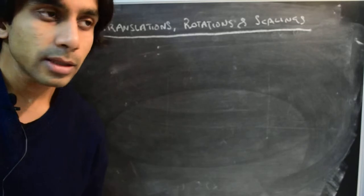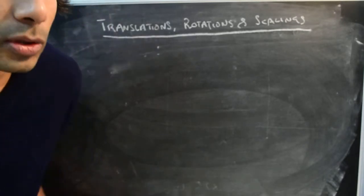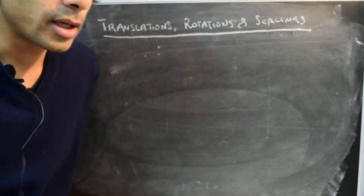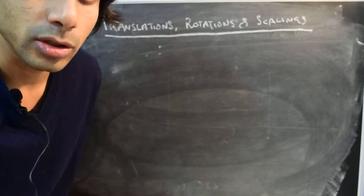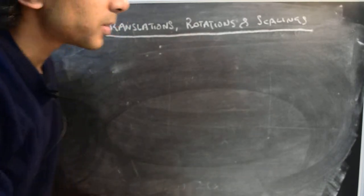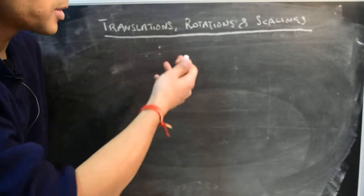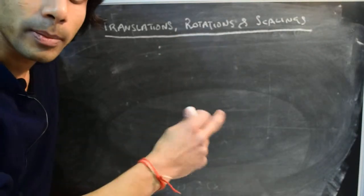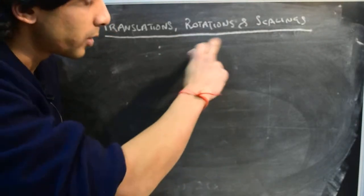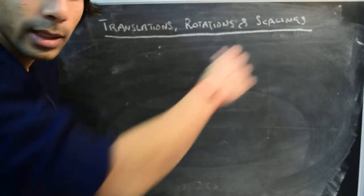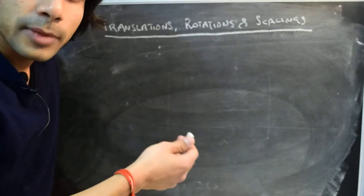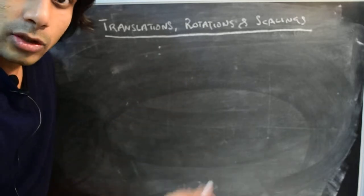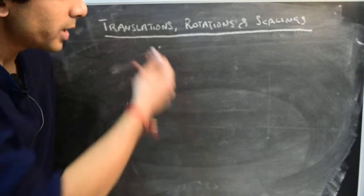This will also give us some interesting interpretations: multiplication by a complex number can be thought of as a composition of rotation and scaling, and addition by a constant can be thought of as translation. Let's take this idea first.